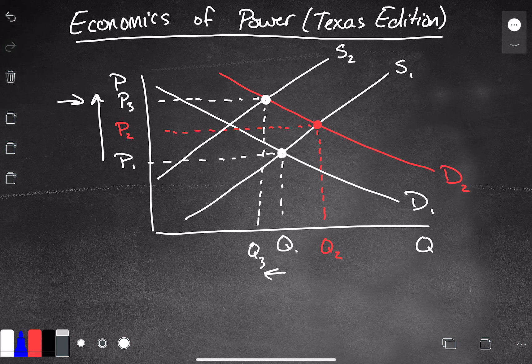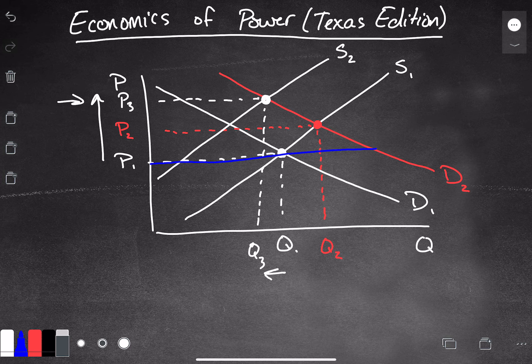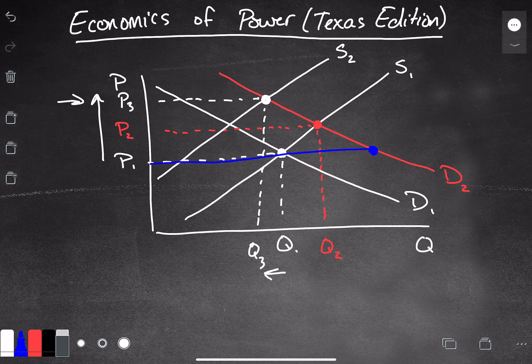Alternatively, what we can do is say, hey, it's not allowed to raise the price. You have to keep the price the same. Well, what that's going to do is drive a wedge between the amount of electricity that people want to consume and the amount that people actually will produce.